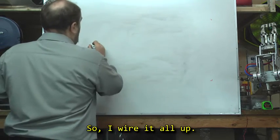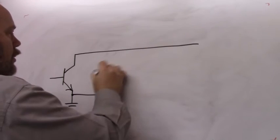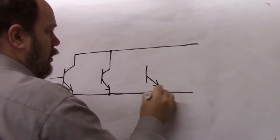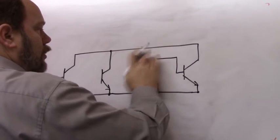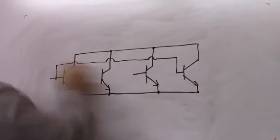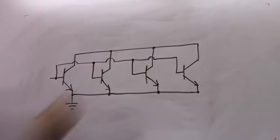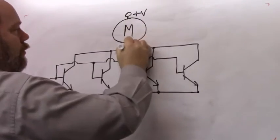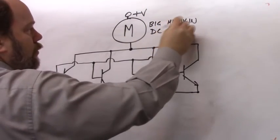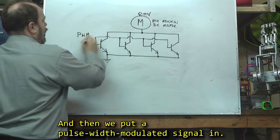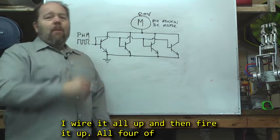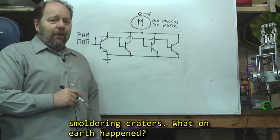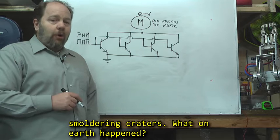So I wire it all up. And then we put a pulse width modulated signal in. I wire it all up and fire it all up. All four of my transistors promptly and loudly turn into smoldering craters. What on earth happened?